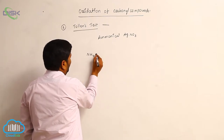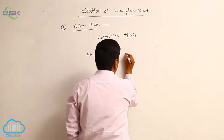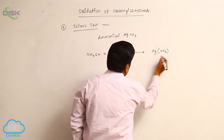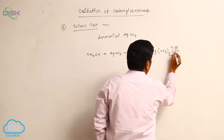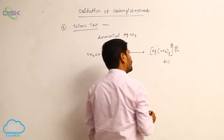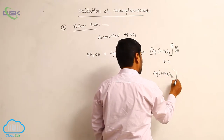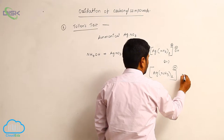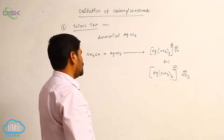When ammonium hydroxide is dissolved in silver nitrate solution, it forms a complex [Ag(NH₃)₂]⁺ NO₃⁻. This particular complex is known as Tollens reagent.